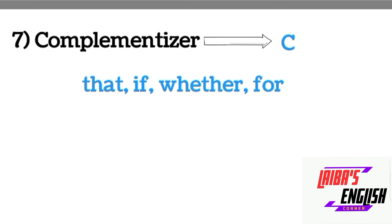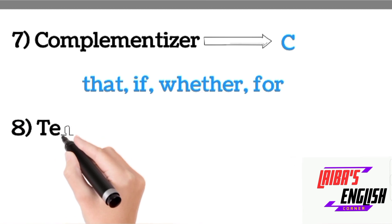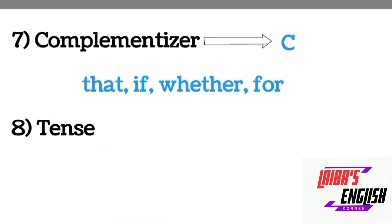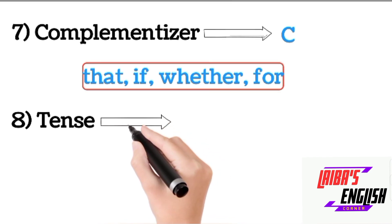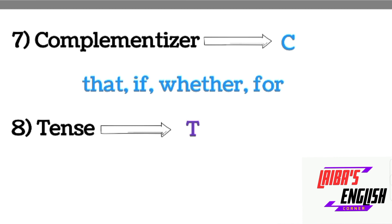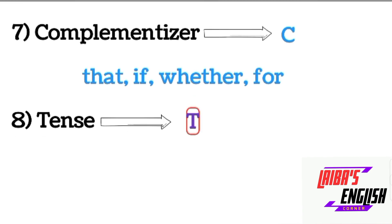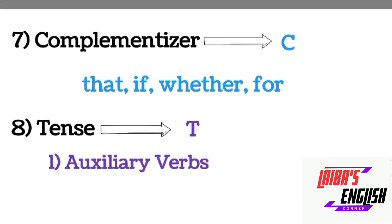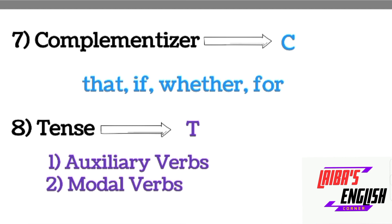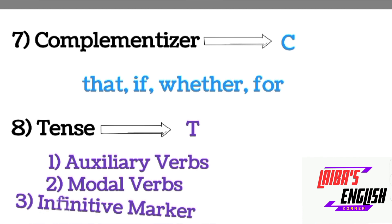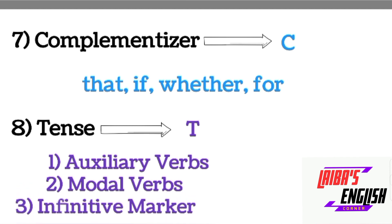The eighth lexical category is tense, which will be denoted by T. Tense includes three things: number one is auxiliary verbs, number two is modal verbs, and number three is the infinitive marker. Auxiliary verbs include all the helping verbs, and modal verbs like can, could — these will be included in tense. The last one is the infinitive marker: whenever you see 'to' plus the first form of a verb, that will be an infinitive marker and that will be part of the sentence.